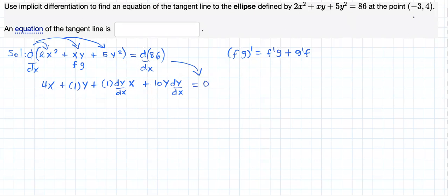Now remember, we are looking at the equation of the tangent line at this particular point. So let's take full advantage of it. We can just replace x with negative 3 and y with 4.